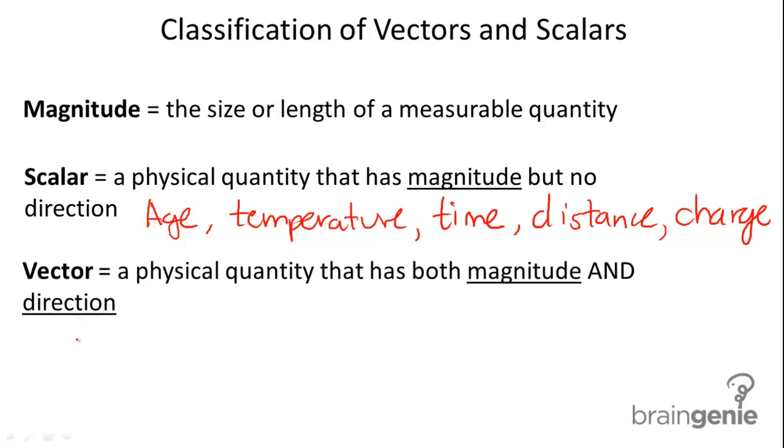Next up, vectors. A vector is a physical quantity that has both magnitude and direction. To give you an example of this, velocity. So for velocity, I can say that I'm driving 50 miles per hour west. So I've given both the magnitude and I've also given a direction.